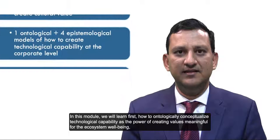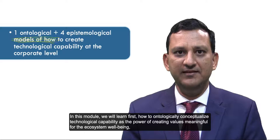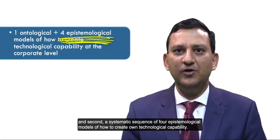In this module, we'll learn about how to ontologically conceptualize technological capability as the power of creating values meaningful for ecosystem well-being, and about a systematic sequence of four epistemological models of how to create one's own technological capability.